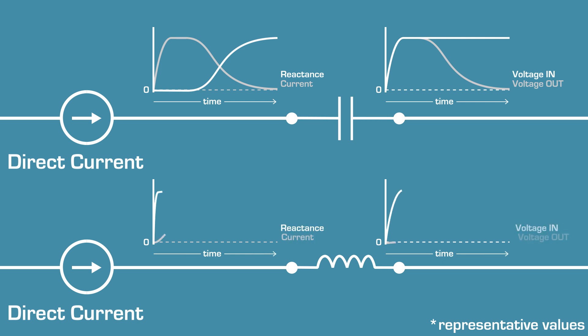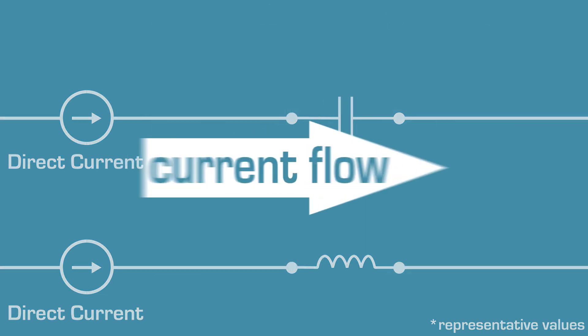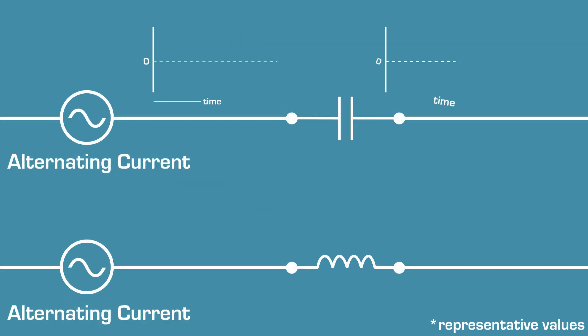Inductors are the opposite, temporarily stopping the flow of direct currents as it builds its magnetic field before letting it pass at low resistance. Alternating current is constantly changing flow directions, and if its frequency is high enough, it passes through a capacitor without distortion.